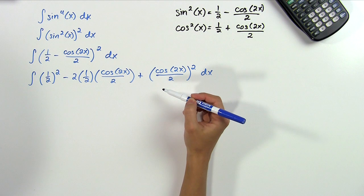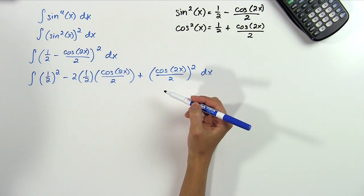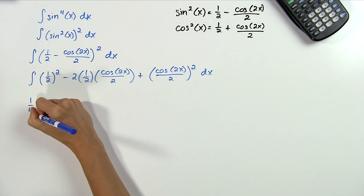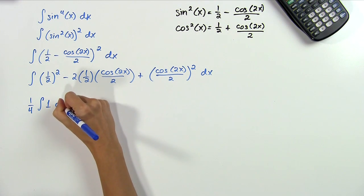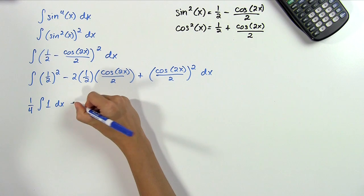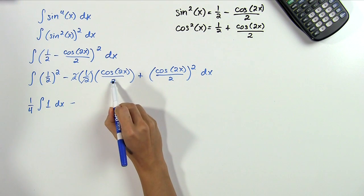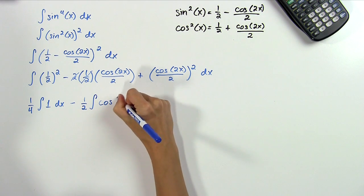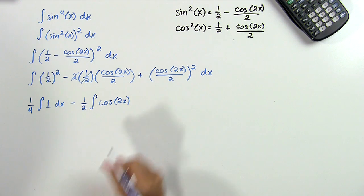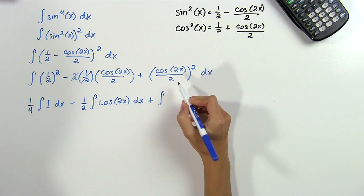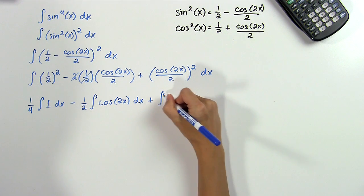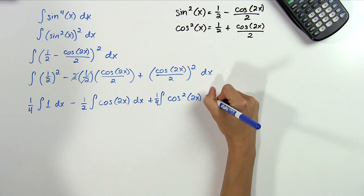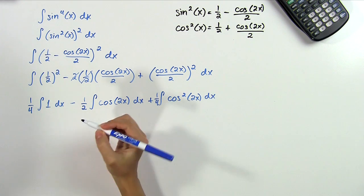Now we can integrate this long string term by term. Let's start by simplifying each term and pulling the constants out. So here for the first one we have 1 fourth comes out and we're left with the integral of 1 dx. In our next integral, the 2 and the 1 half cancel out and we can go ahead and pull this 2 out as a 1 half times the integral of cosine 2x dx plus the next integral which we can also pull a 1 fourth out after we square that. And then we'll have cosine squared of 2x left inside. Now hopefully this looks a little more doable.